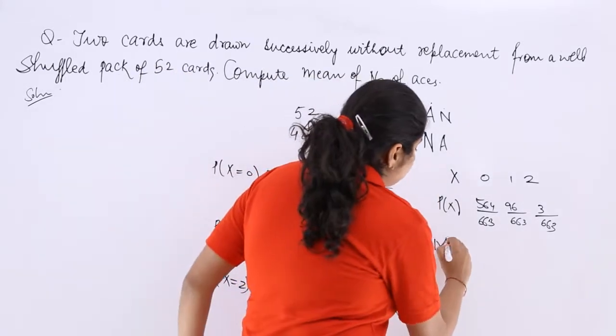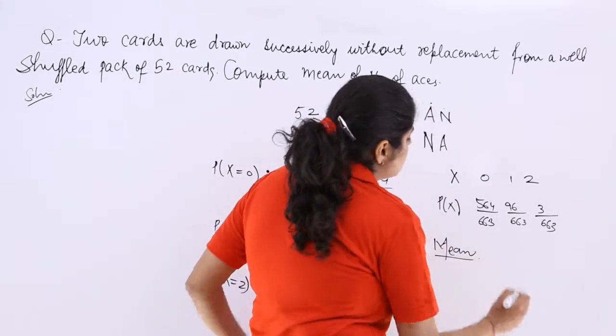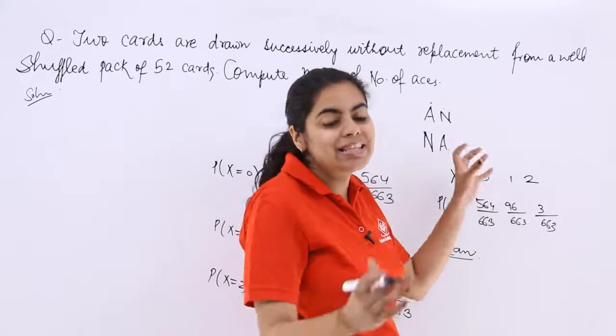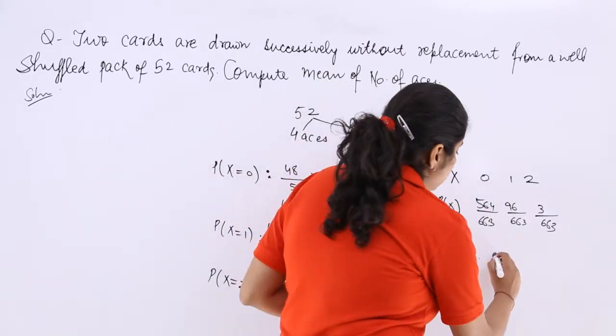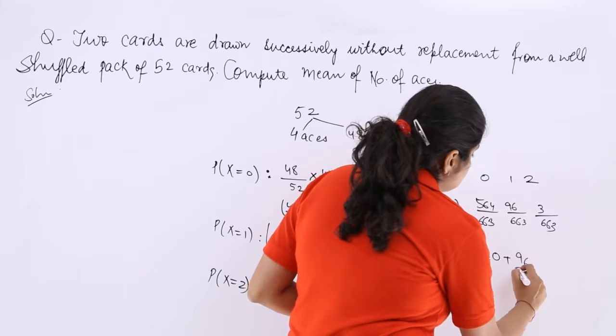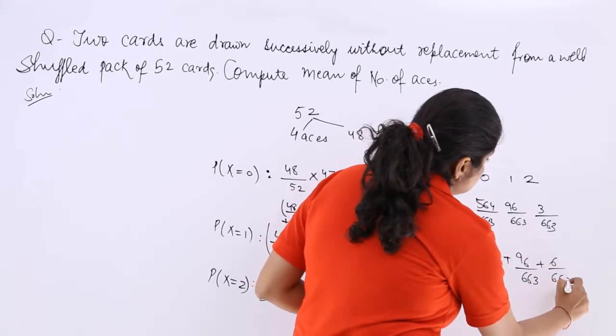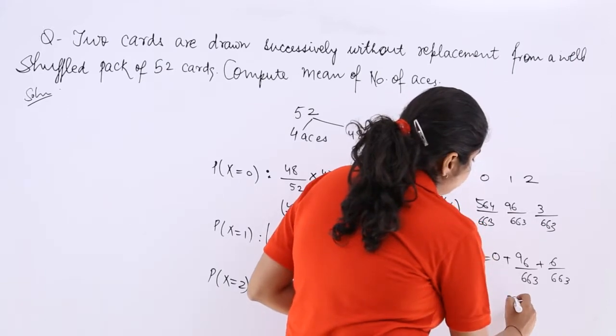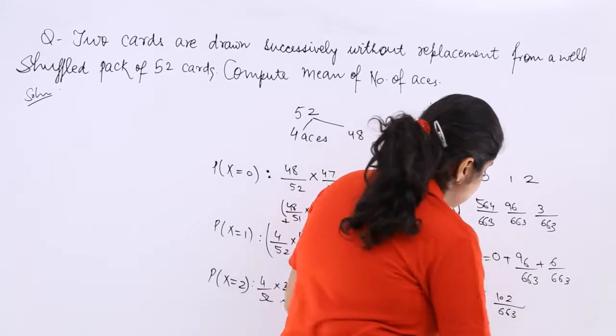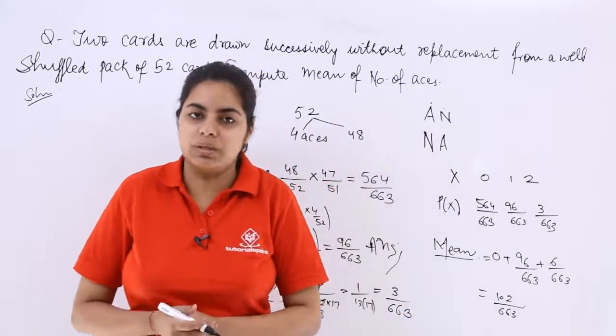Now what is the mean? The mean is multiplication and the successive addition. So 0 plus 96 over 663 plus 6 over 663. So this is 102 over 663 and that should be the answer.